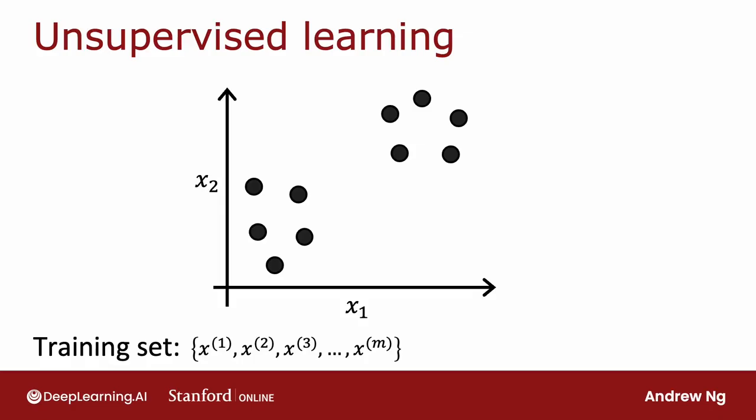Instead, we're going to ask the algorithm to find something interesting about the data, that is, to find some interesting structure about this data. The first unsupervised learning algorithm that you learn about is called a clustering algorithm, which looks for one particular type of structure in the data. Namely, they'll look at the dataset like this and try to see if it can be grouped into clusters, meaning groups of points that are similar to each other. So a clustering algorithm in this case might find that this dataset comprises data from two clusters shown here.